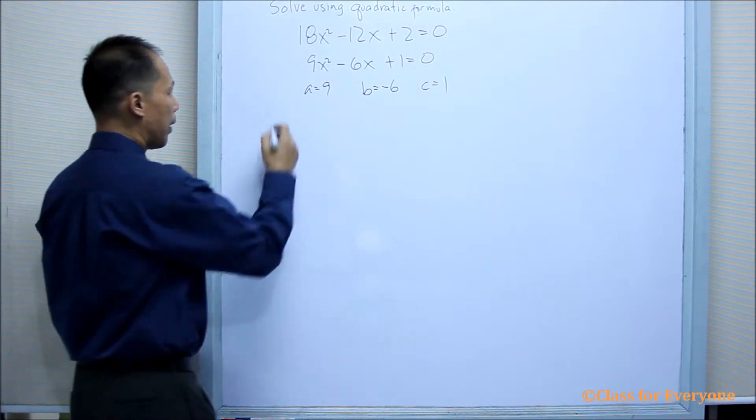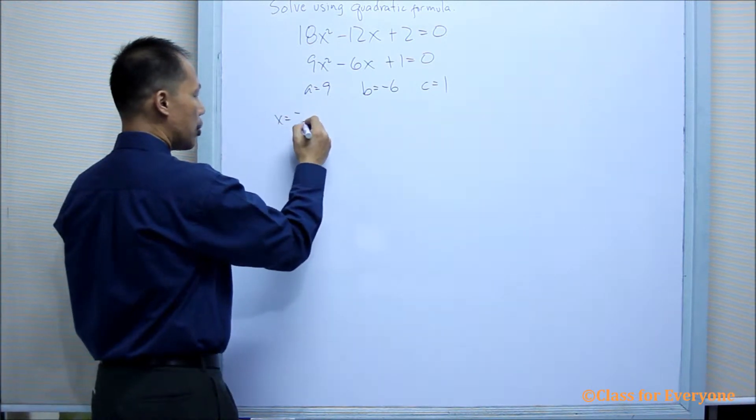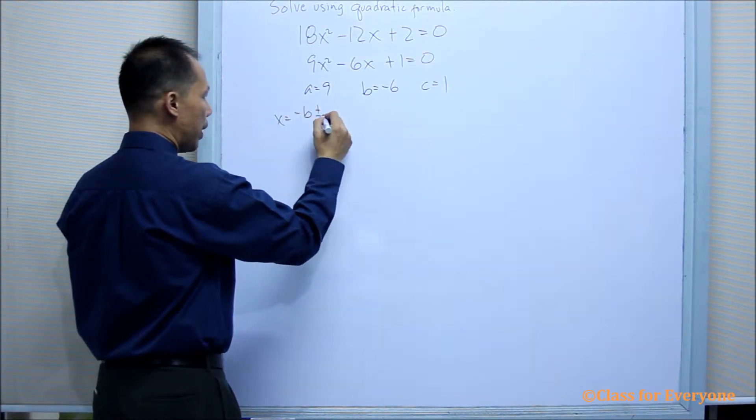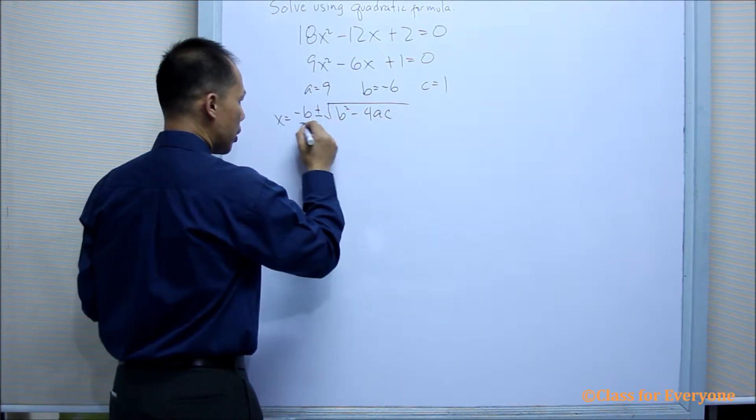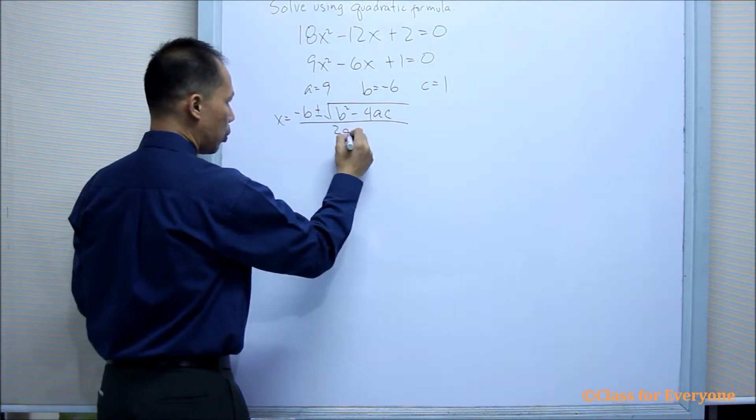Now, using the quadratic formula, x is equal to negative B plus or minus the square root of B squared minus 4AC, all over 2A.